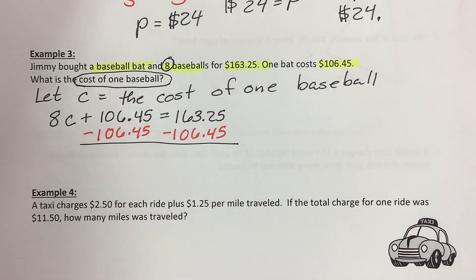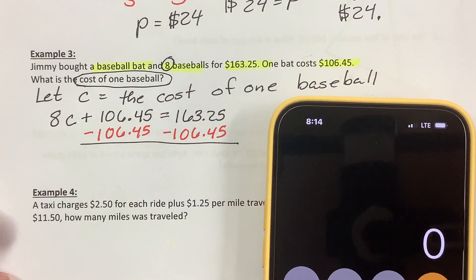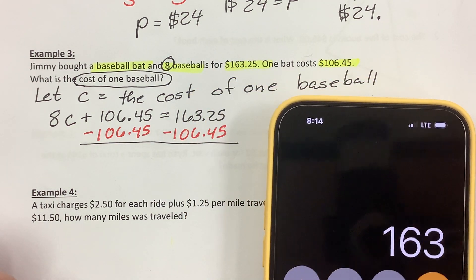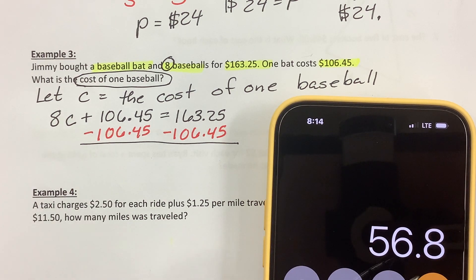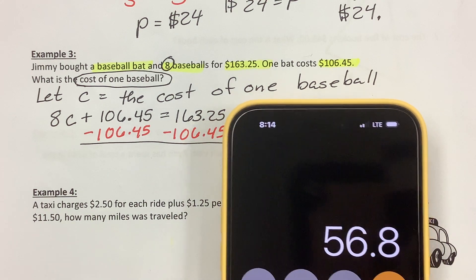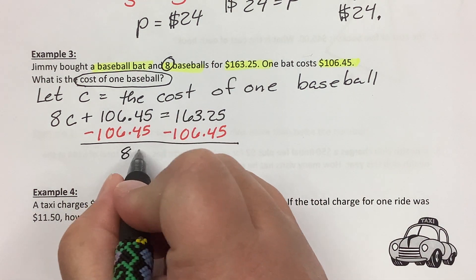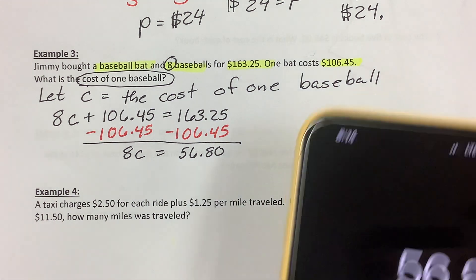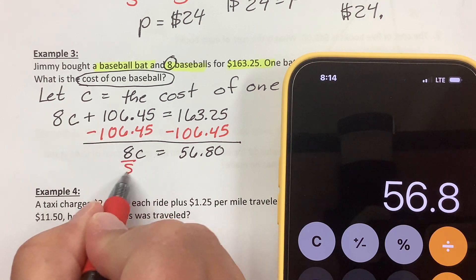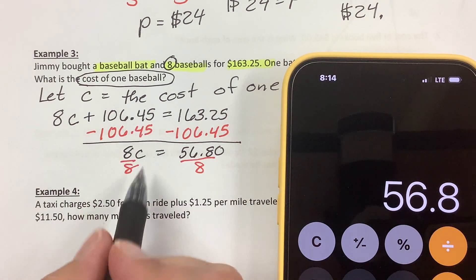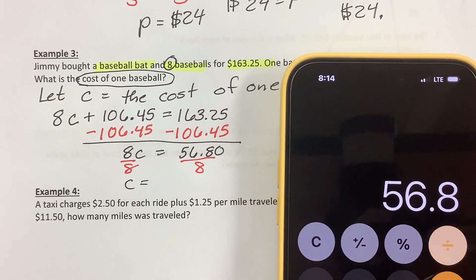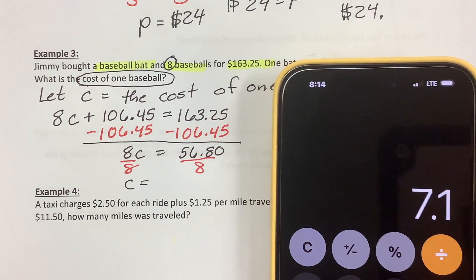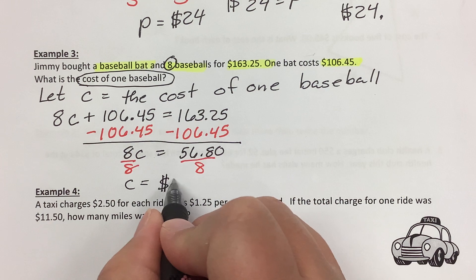I don't have my calculator right next to me, but my phone will do the math. $163.25 minus $106.45 for the bat — that's $56.80. So 8C equals $56.80. I'll keep the zero because I need it. Now I have to divide by 8, and the cost equals $56.80 divided by 8, which is $7.10.